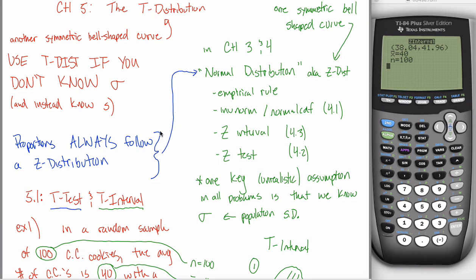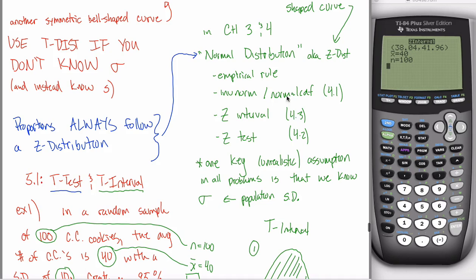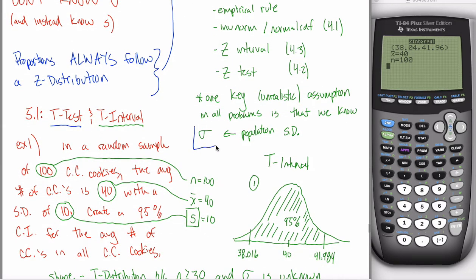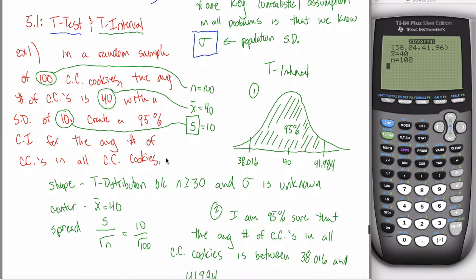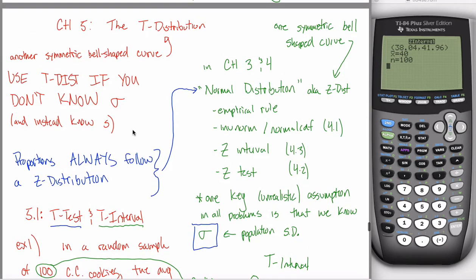The big idea with the t-distribution is that everything that you learned in the past is reliant upon knowing the population standard deviation sigma. All of the inverse norm, normal CDF, z-interval, z-test stuff that we've done so far, we needed to know sigma, the population standard deviation. And it turns out, unfortunately, often it's unrealistic to know the population standard deviation, and it's much more realistic to calculate the sample standard deviation s. And there's a downside to using s in place of sigma in these problems, and it's that your distribution that is now relevant is the t-distribution and not the z-distribution.